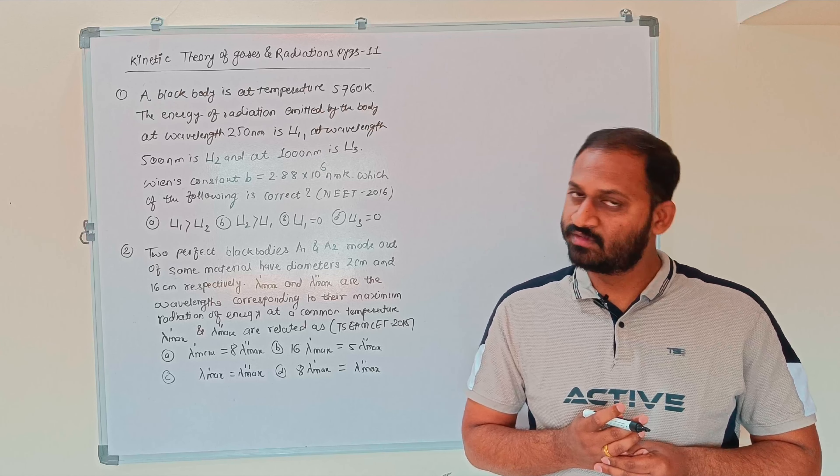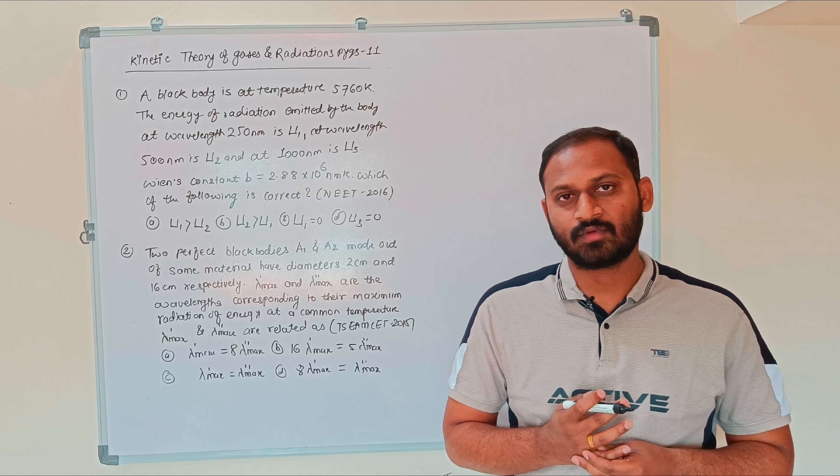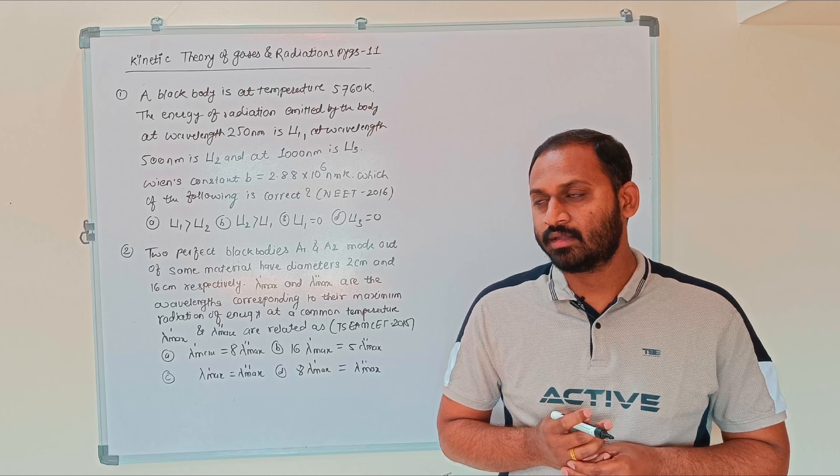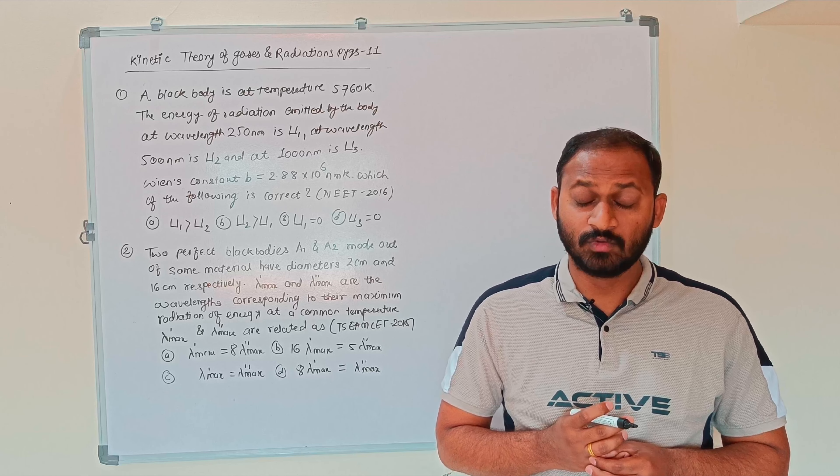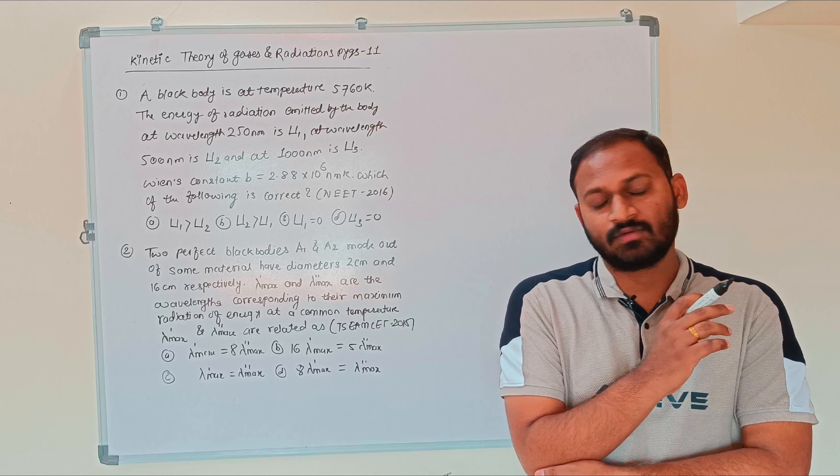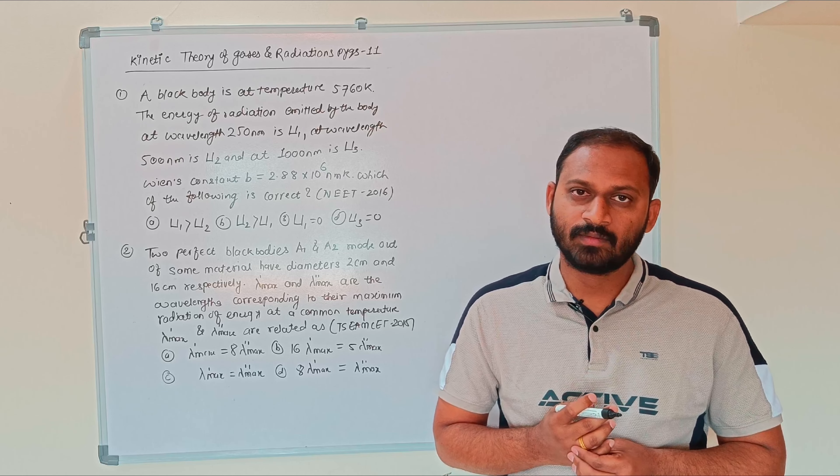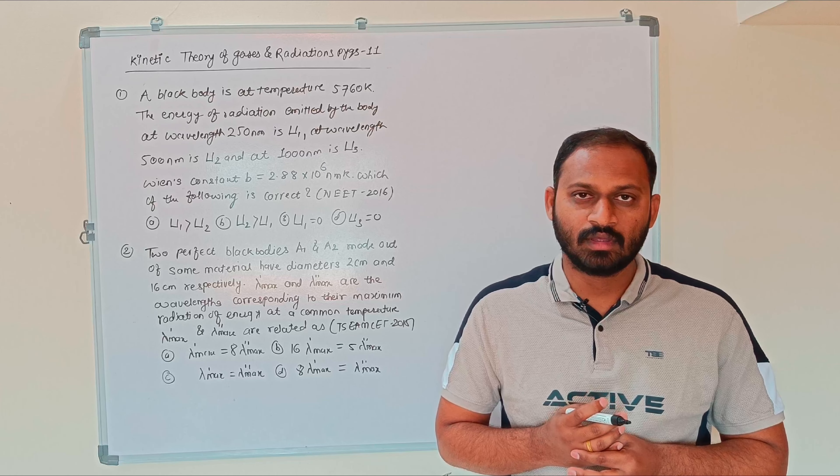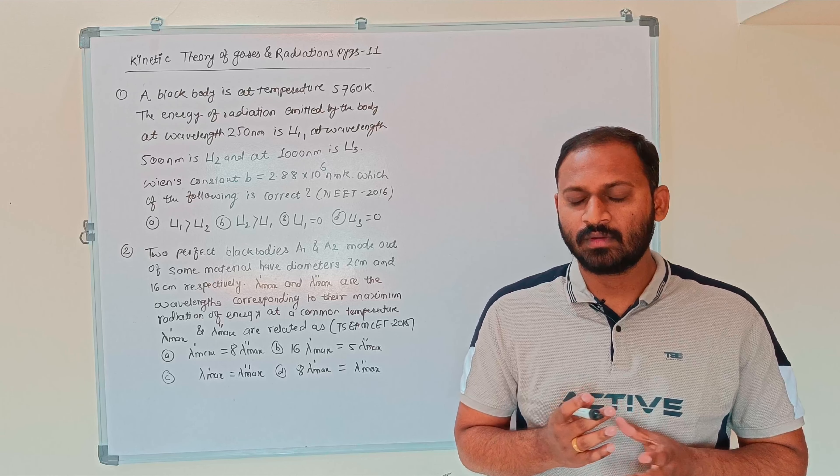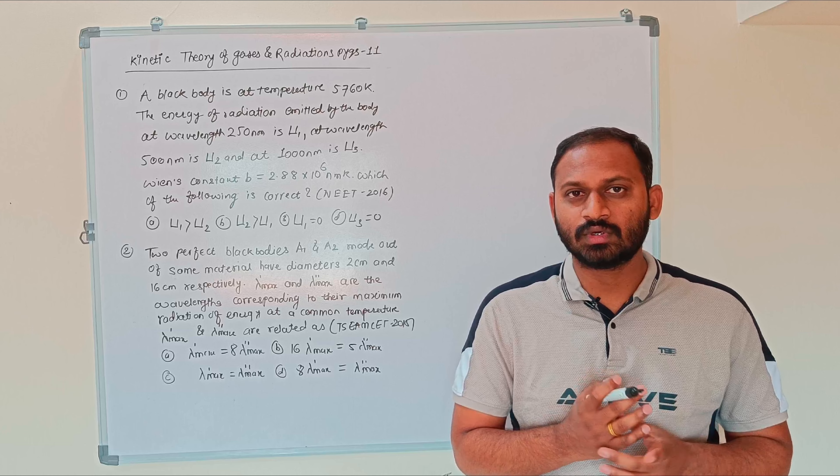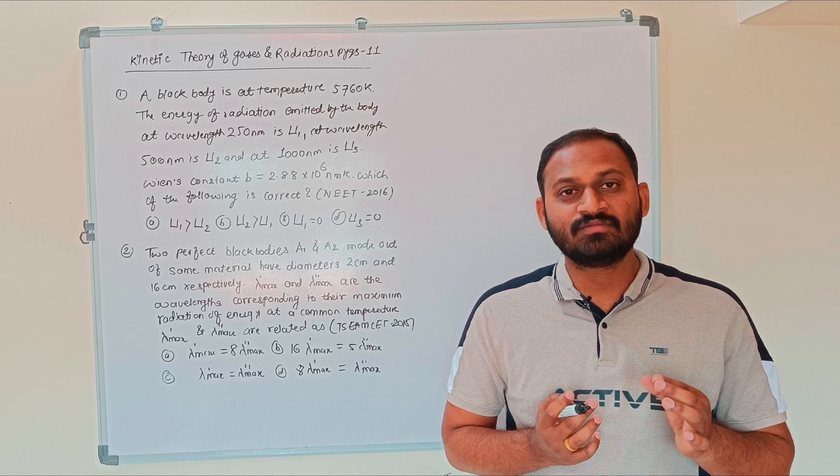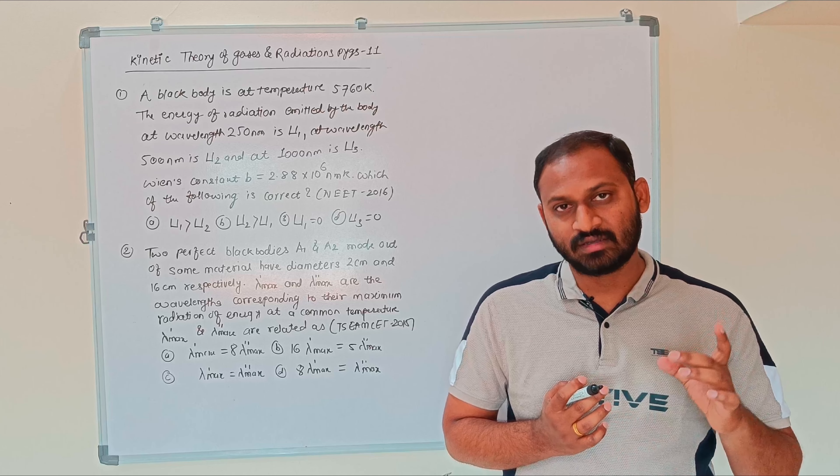Both examples are from the concept of Wien's displacement law. In the last lecture we discussed a numerical from the BSCC exam based on this concept. I've already told you it is a very easy law because there are only two physical quantities. First one is lambda maximum, the maximum wavelength corresponding to that temperature.